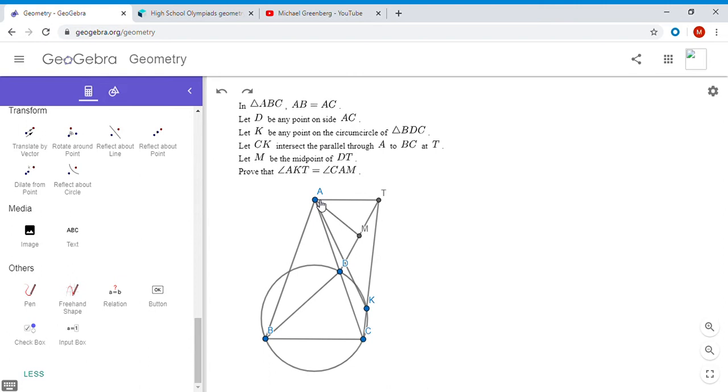If you really wanted to work out the details completely, we'd have by power of a point AD times AC would be—if we call this point E—it would be AE times AB. But AC is equal to AB, so AD is equal to AE. So basically, DE has to be parallel to BC. BC we know is parallel to AT, so that gives us some good information.